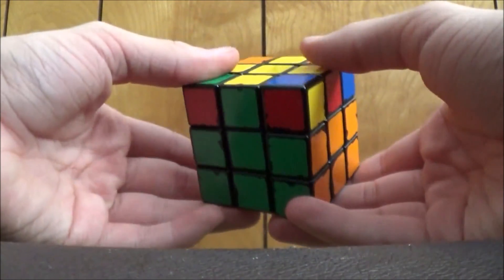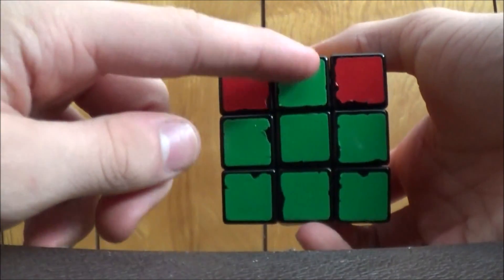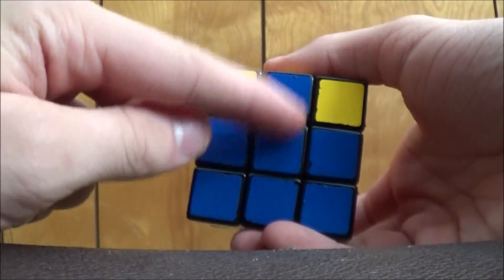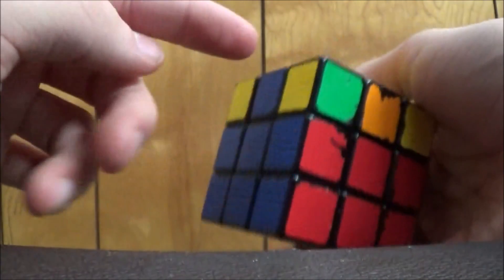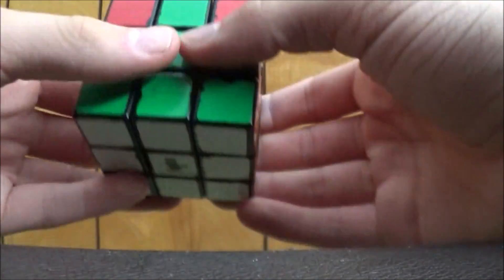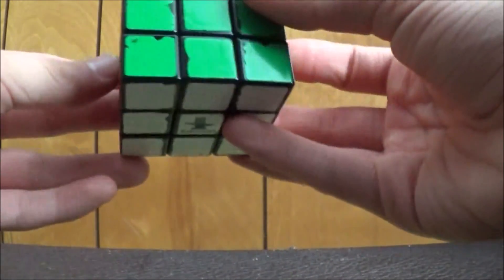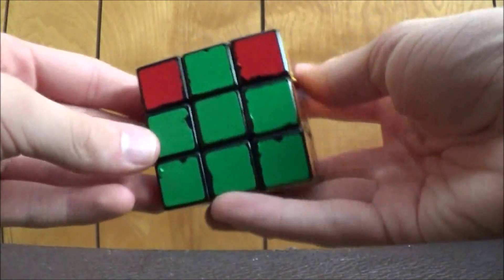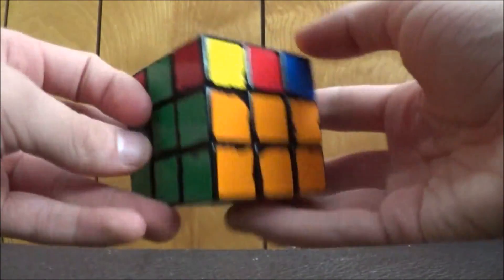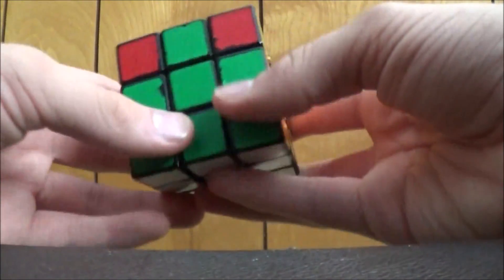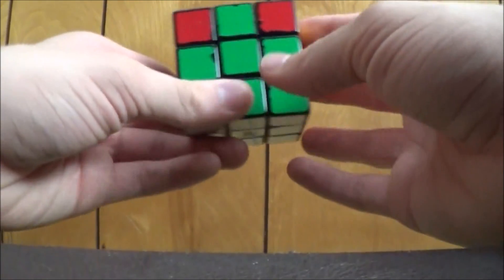When you're pairing edges here in step number five, and you have an edge right here and an edge right here across from each other like this, then here's what you can do to switch them. You hold them in the exact same way as you would, one on the front and one on the back, and you switch it using this algorithm.